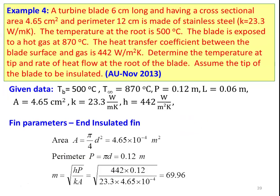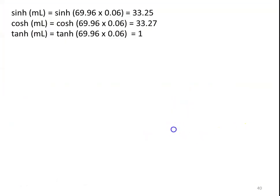For the end-insulated fin, area is given as 4.65 × 10⁻⁴ meter square and perimeter is 0.12 meter. The parameter m = √(HP/KA) = √(442 × 0.12 / (23.3 × 4.65 × 10⁻⁴)) = 69.96. Calculating the hyperbolic values: sinh(ML) = 33.25, cosh(ML) = 33.27, and tanh(ML) = 1. To use the calculator, press the hyperbolic function, then sine, then open bracket, substitute the value 69.96 × 0.06, close the bracket.